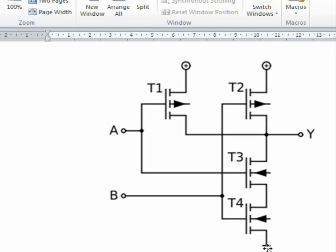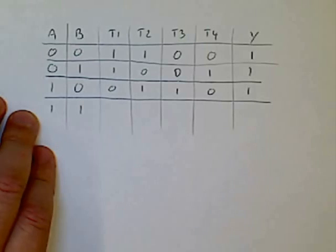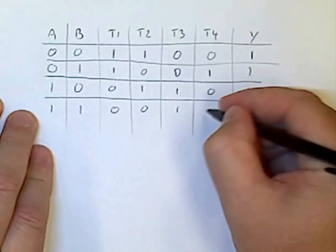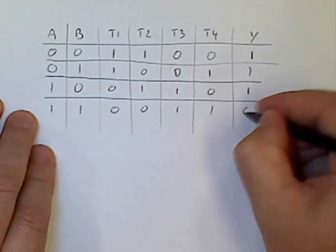So in our truth table, T1 and T2 are both zero. T3 and T4 are both one, so the output is zero.